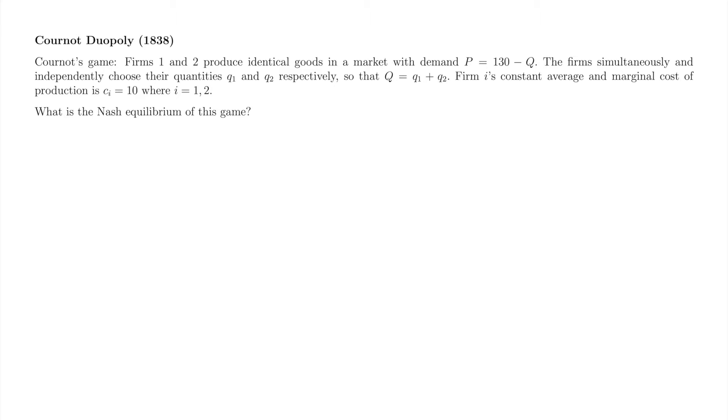We want to find the Nash equilibrium of this game, i.e. quantities that constitute mutual best responses. Cournot was interested in comparing these quantities to the output of a monopolist in the same market. Like Cournot, we will answer this question after we find the Nash equilibrium quantities.